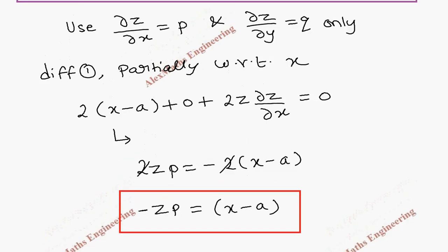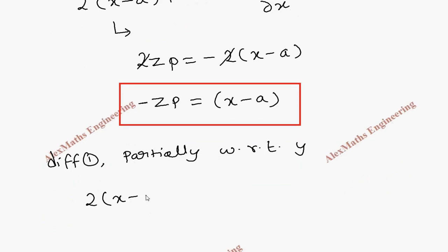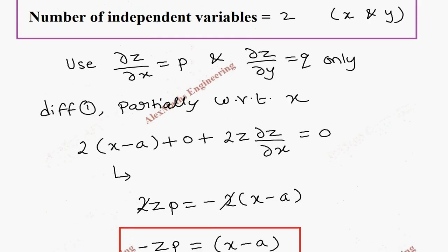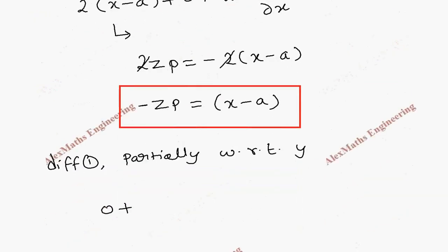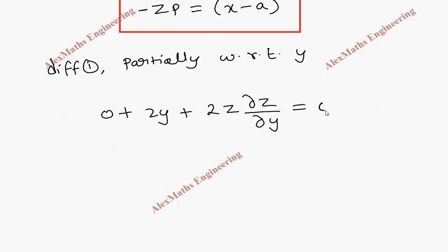In the same way, we are going to differentiate equation 1 partially with respect to y. The first term is constant, so it is 0. The second term y² gives 2y, plus z² gives 2z·∂z/∂y, and r² is constant, which is 0.